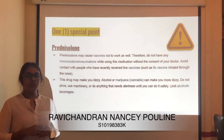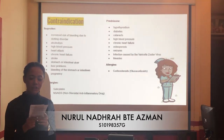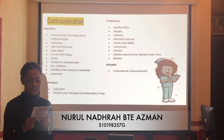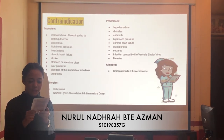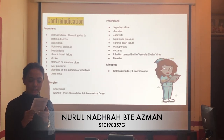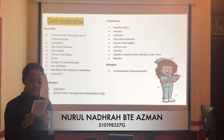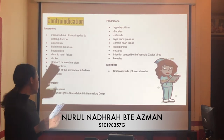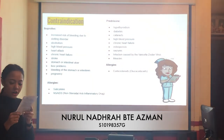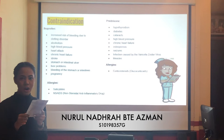Contraindications for ibuprofen include: increased risk of bleeding due to clotting disorder, alcoholism, high blood pressure, heart attack, chronic heart failure, stroke, stomach or intestinal ulcer, liver problems, bleeding of the stomach or intestine, and pregnancy. Allergy contraindications include salicylate or NSAID (non-steroidal anti-inflammatory drug) allergy. Contraindications for prednisolone include: hypothyroidism, diabetes, cataract, high blood pressure, chronic heart failure, osteoporosis, seizures, infection caused by the varicella zoster virus, and measles. Allergy contraindications include corticosteroids and glucocorticoids.